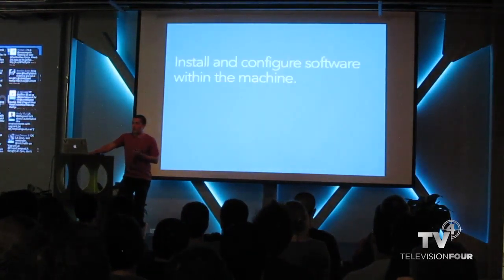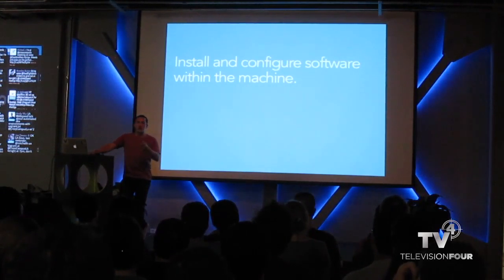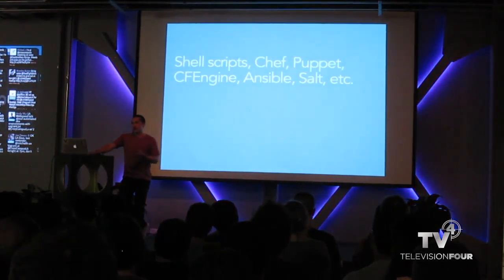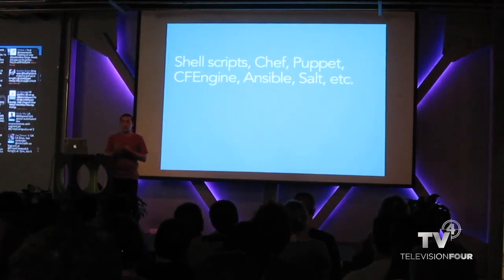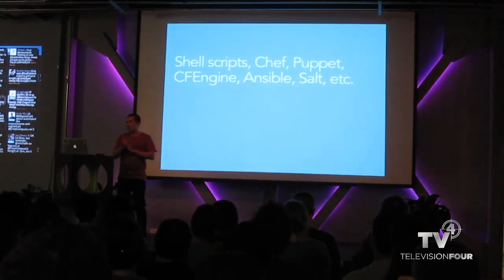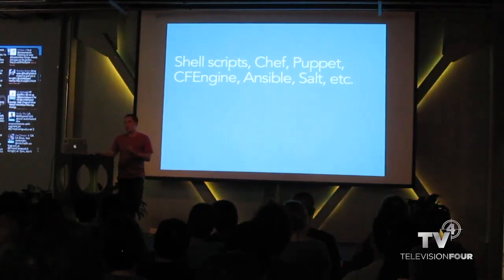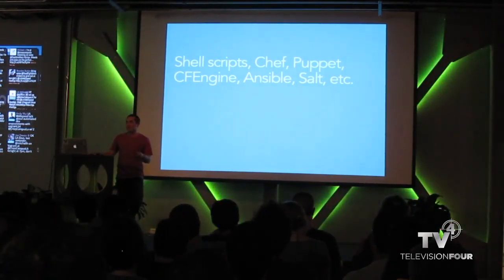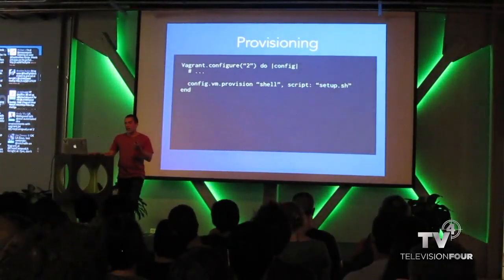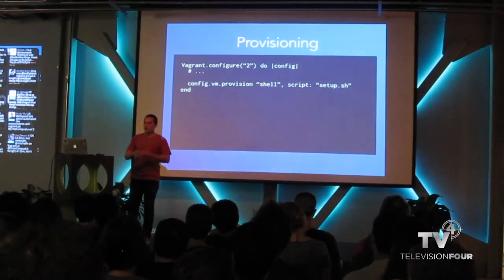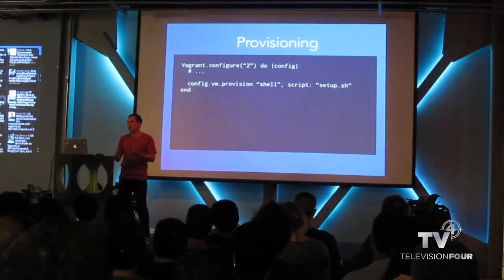There's provisioning. Vagrant out of the box can install and configure software automatically, depending on what configuration system you use — basic shell scripts, Chef, Puppet, CFEngine, recently Ansible, and soon Salt. Whatever you're using, it supports it, and if not, there's probably a plugin. Provisioning is a one-line config in the Vagrantfile — tell it what you want, configure it a little bit, run Vagrant up, and you're up and running.